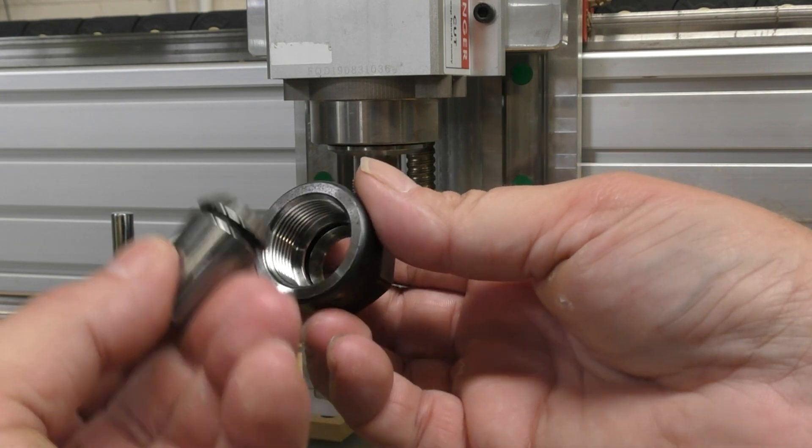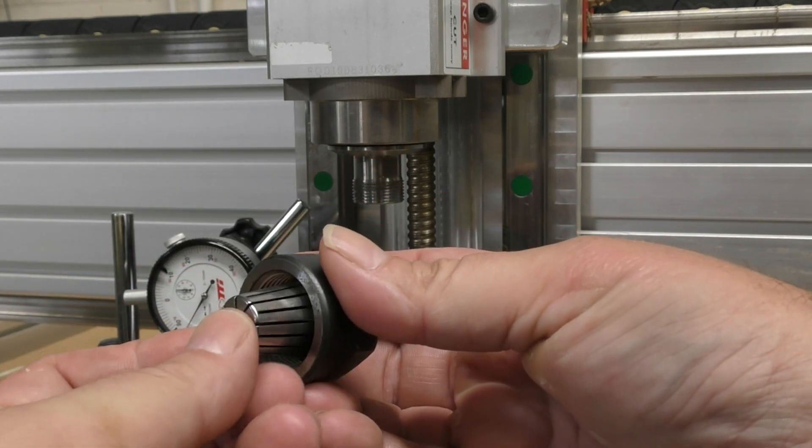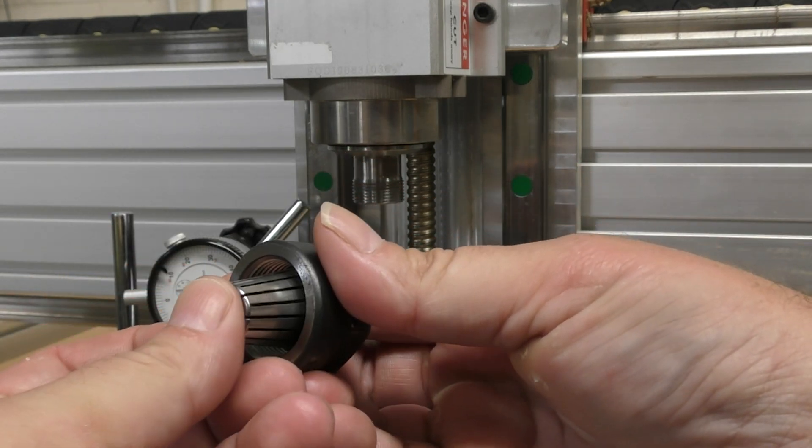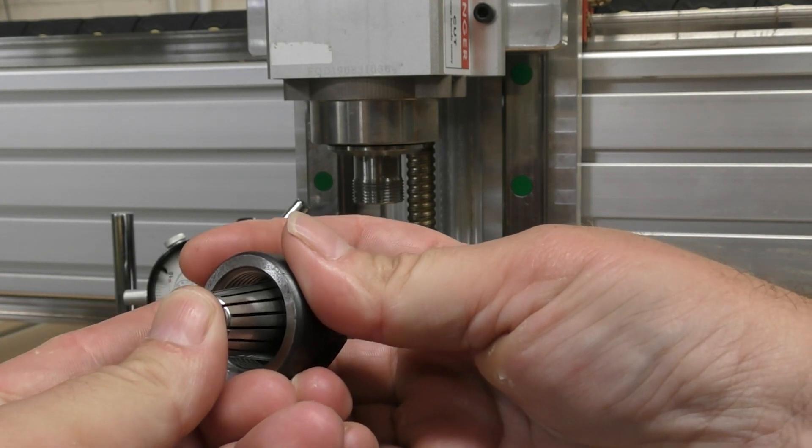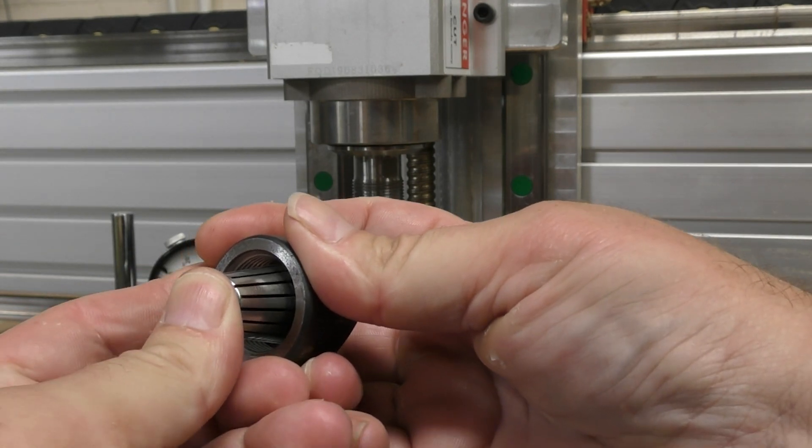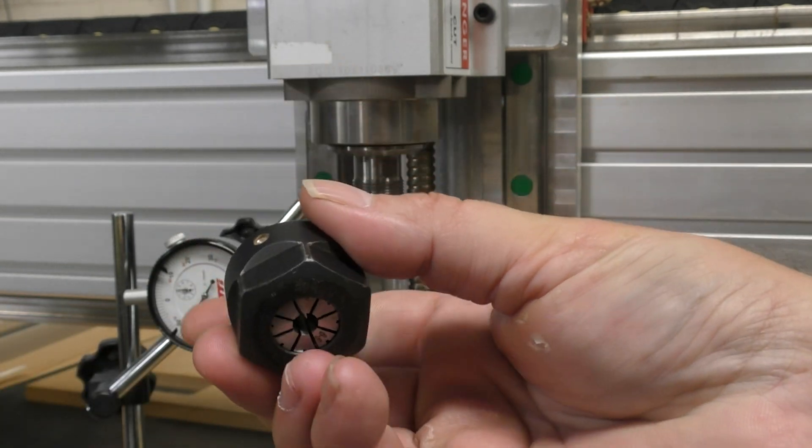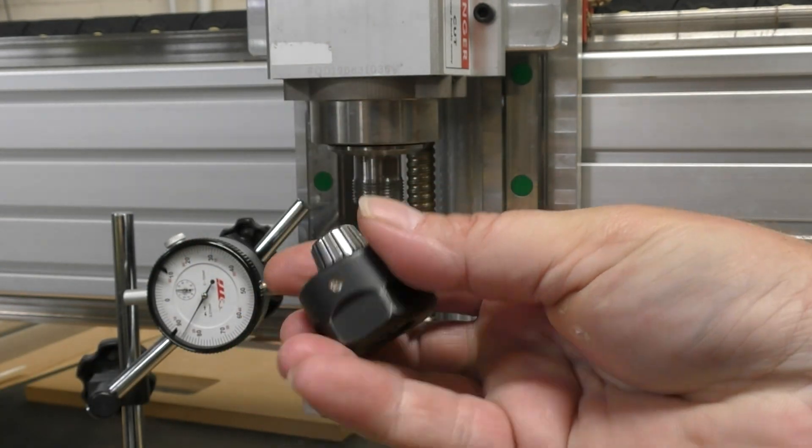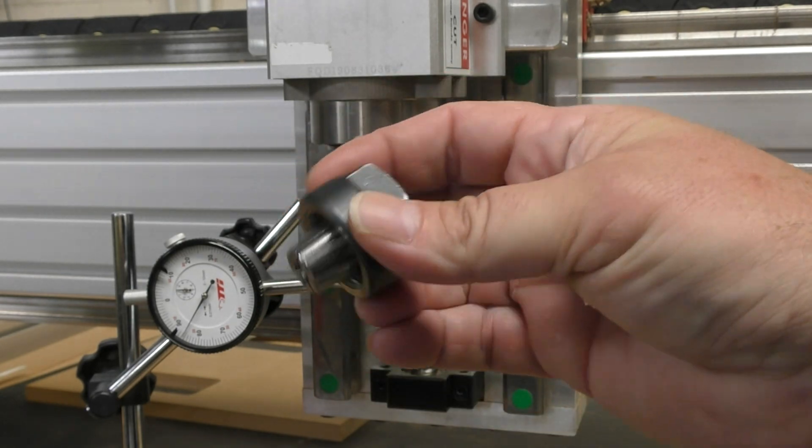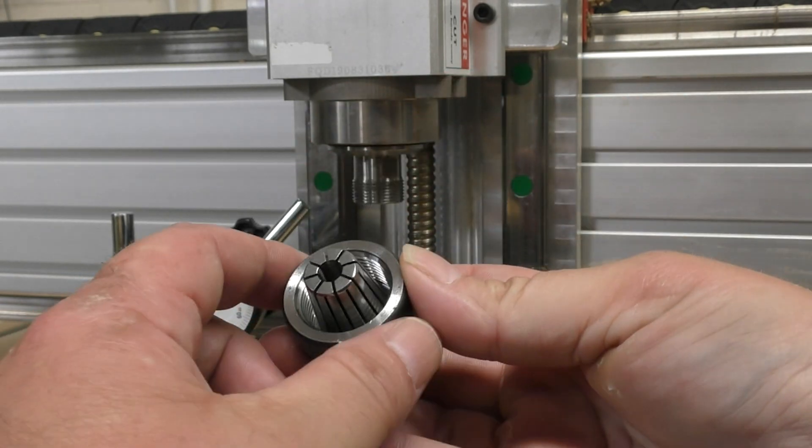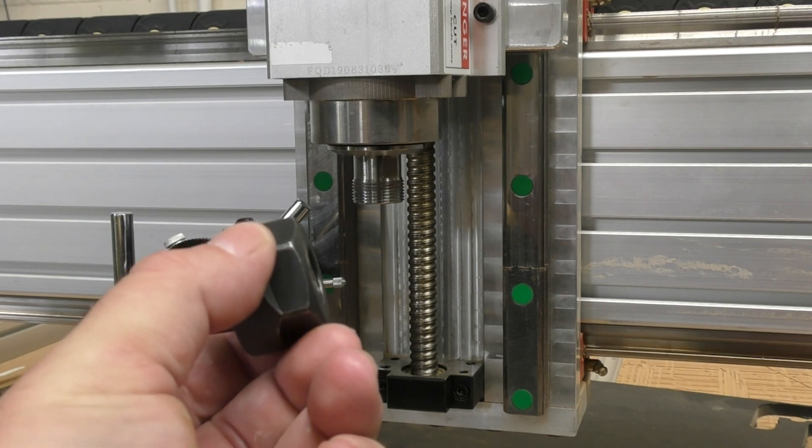We're going to push this collet into here without a tool in there and get it to actually click in. Just keep pushing until it clicks, and you probably just heard that click. That is now inserted into the collet and it won't actually fall out of the collet nut.